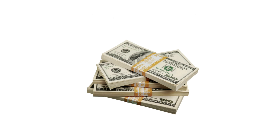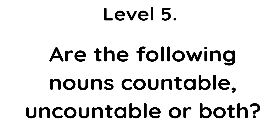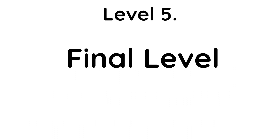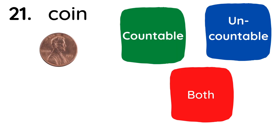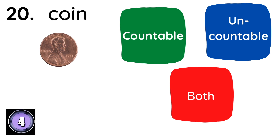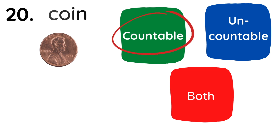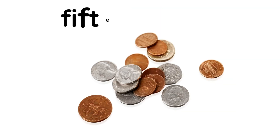Level five. Are the following nouns countable, uncountable, or both? Final level. Coin. Countable. Fifteen coins.